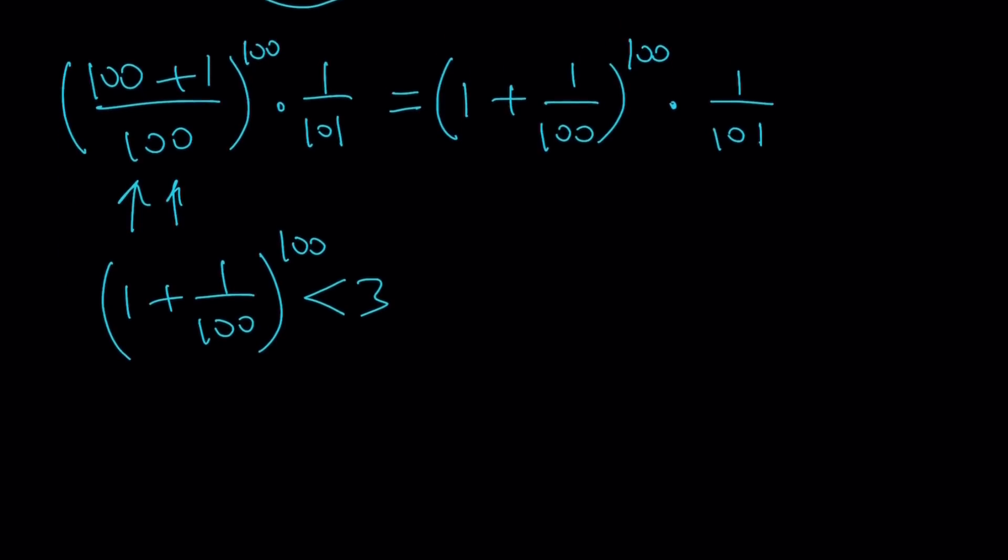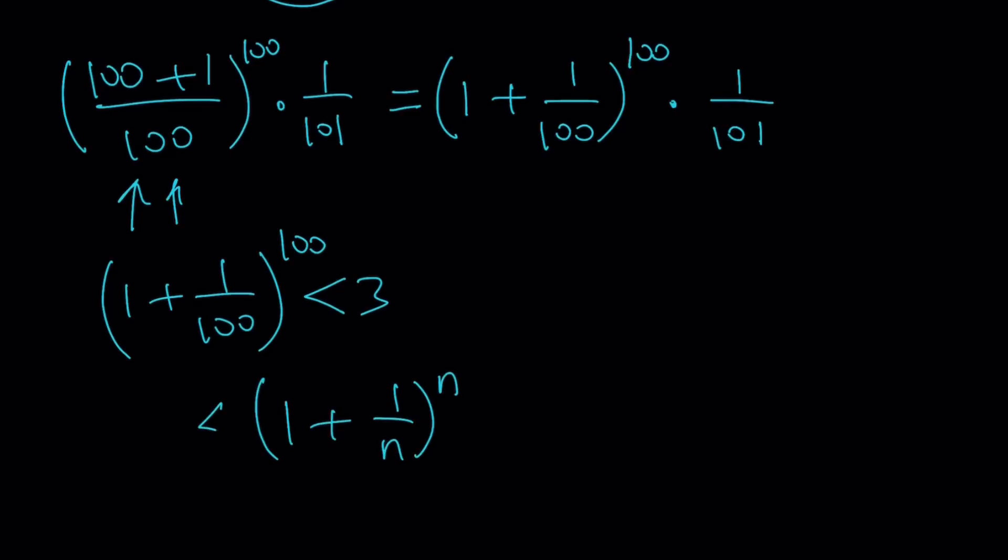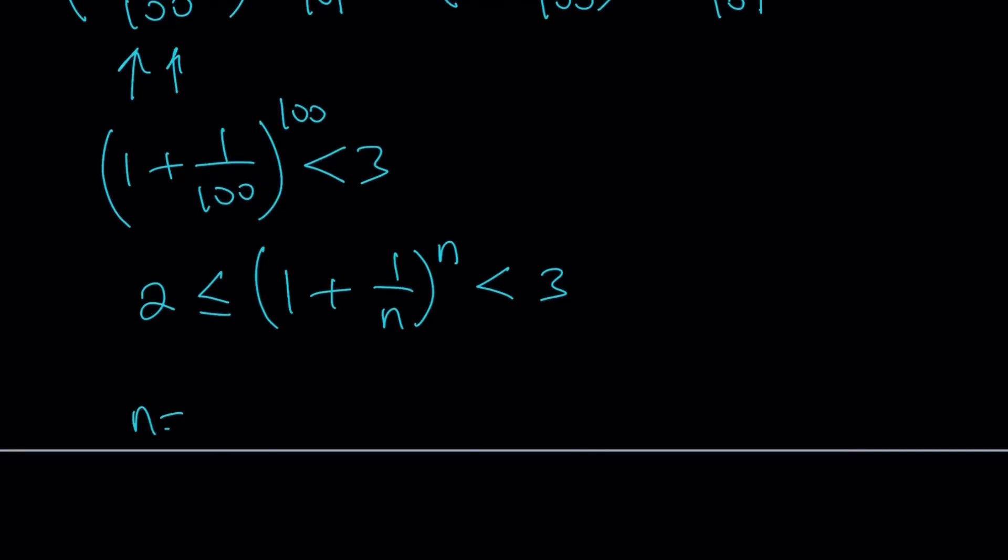In general, this is what we can say. If you have something like 1 plus 1 over n to the power n, this expression is actually going to be always between 2 and 3 for positive integers n. The reason why we have an equality is because if n is equal to 1, then we get 1 plus 1 over 1 to the power 1, which is equal to 2. But it's always less than 3. And actually, if you look at the limit as n approaches infinity of 1 plus 1 over n to the power n, you're going to get e, which is Euler's number.